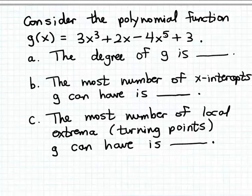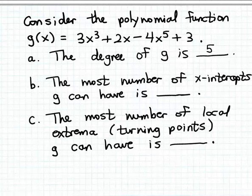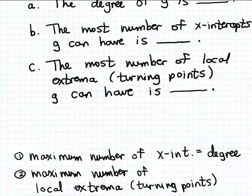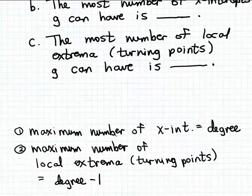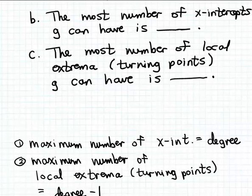So the highest power of the input variable in this formula is clearly 5, and so that's the degree of the function g. The degree gives us important information about the maximum number of x-intercepts that the function g can have, and the maximum number of local extrema. The maximum number of x-intercepts that a polynomial function can have is the same as its degree, so since the degree of g is 5, the maximum number of x-intercepts g can have is also 5.